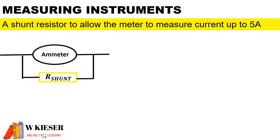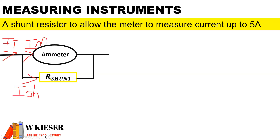In order for our galvanometer to act as an ammeter, we put a resistor in parallel with the meter in order to divide the current, and this prevents all the current passing through the meter. We have our total current coming through before our network, the current passing through the meter, and then the shunt current. The shunt current is equal to I-total minus the current through the meter.